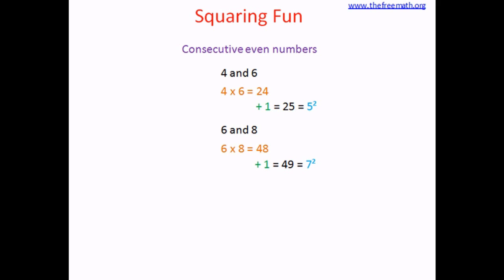So what do you see here? You can see that when you multiply these two consecutive even numbers and add 1 to it, you are getting the square of a number which is in the middle of these two numbers.